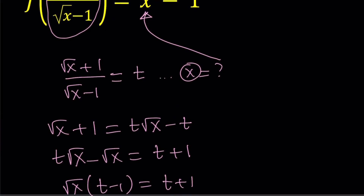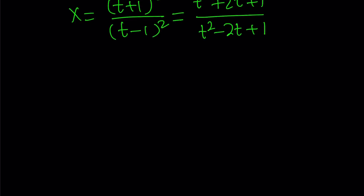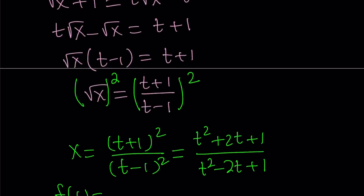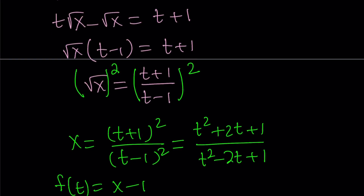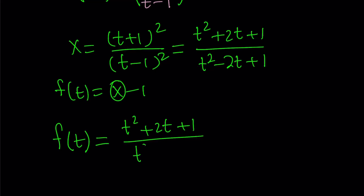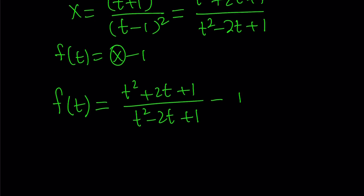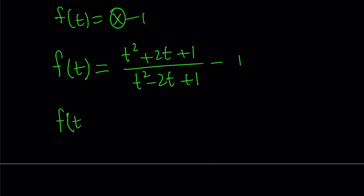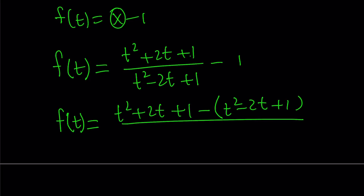So that is the x value. We had f of t equals x minus 1, and now we're going to replace x with what it is. So replace x with t squared plus 2t plus 1 over t squared minus 2t plus 1 — that's the power of substitution; complicated expressions turn into single variables. Now make a common denominator by computing t squared plus 2t plus 1 minus the quantity t squared minus 2t plus 1, all divided by t squared minus 2t plus 1.